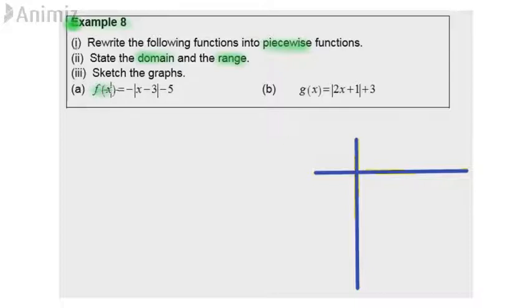Part A: f(x) is equal to negative modulus x minus 3, then minus 5.